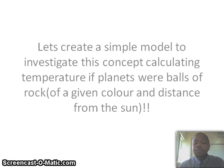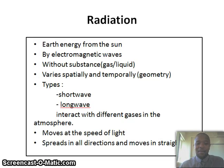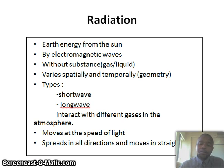Let's create a simple model to investigate this concept by calculating the temperature if the planets were balls of rock of a given color and distance from the sun. This means we assume no atmosphere or oceans, which enables us to compare apples to apples. But to build a realistic model, we first need to know how the Earth receives energy from the sun. The simple answer is radiation — the transfer of energy from the sun by electromagnetic waves in a vacuum. It varies spatially and temporally, comes in short wave or long wave, interacts with different gases in the atmosphere, moves at the speed of light, and spreads in all directions in straight lines.